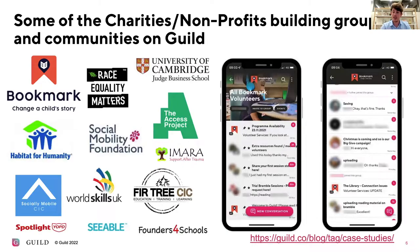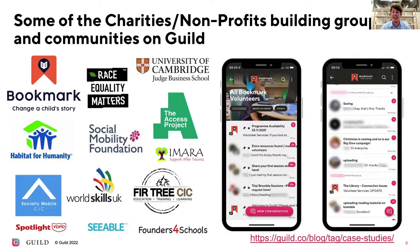Guild is trusted by charities, non-profits, and those in the education sector. Manchester Metropolitan University, Cambridge Business School, and the non-profit PR school Socially Mobile host learning and alumni communities on the platform. The child literacy charity Bookmark uses Guild to coordinate its volunteers. Guild is also home to communities of purpose, such as Race Equality Matters and the Anti-Racism Innovation Community.